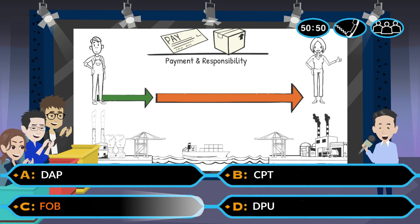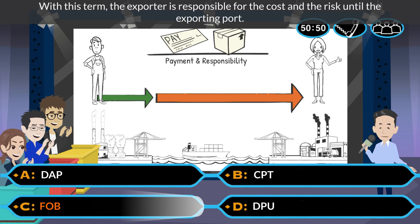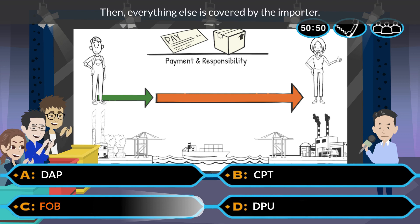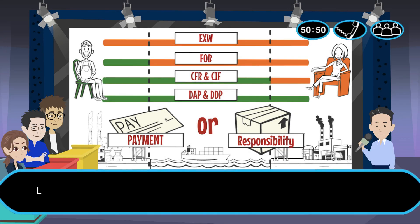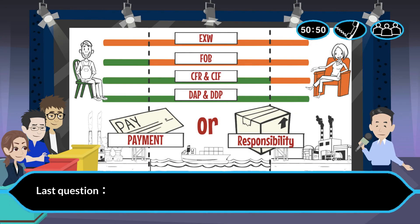The answer is C. FOB. With this term, the exporter is responsible for the cost and the risk until the exporting port. Then everything else is covered by the importer. FOB is the term which is often used in trading. This is the last question.